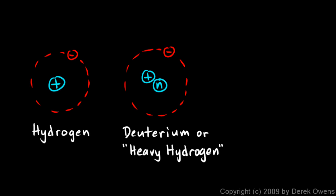And then there's a third form of hydrogen called tritium. And tritium has a proton and 2 neutrons in the nucleus. There's still a single electron going around, but now we have a mass number of 3.